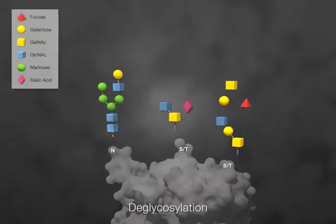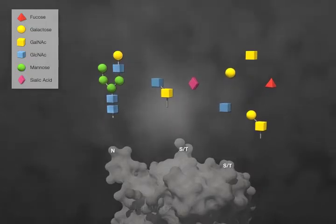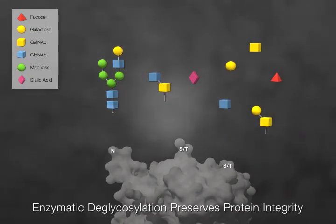Deglycosylation refers to the removal of glycans from proteins. Enzymatic deglycosylation is the method of choice because it preserves the integrity of the protein, and sometimes the glycan chains, for further analysis.